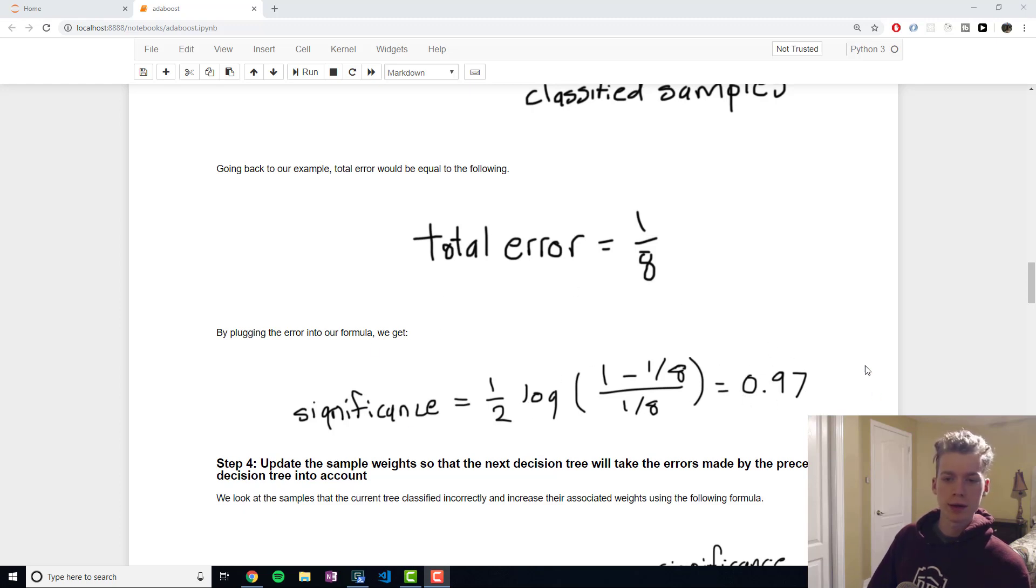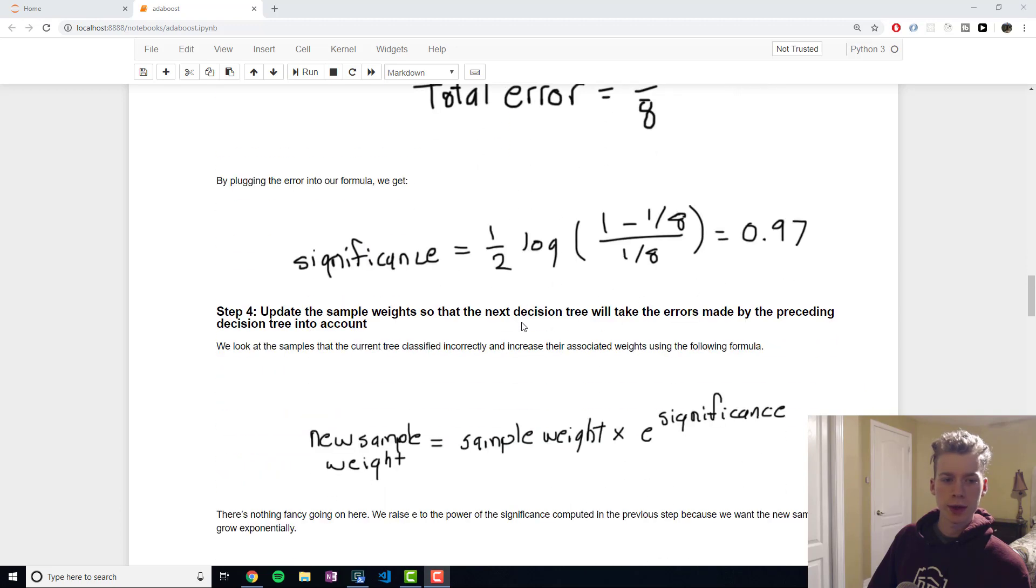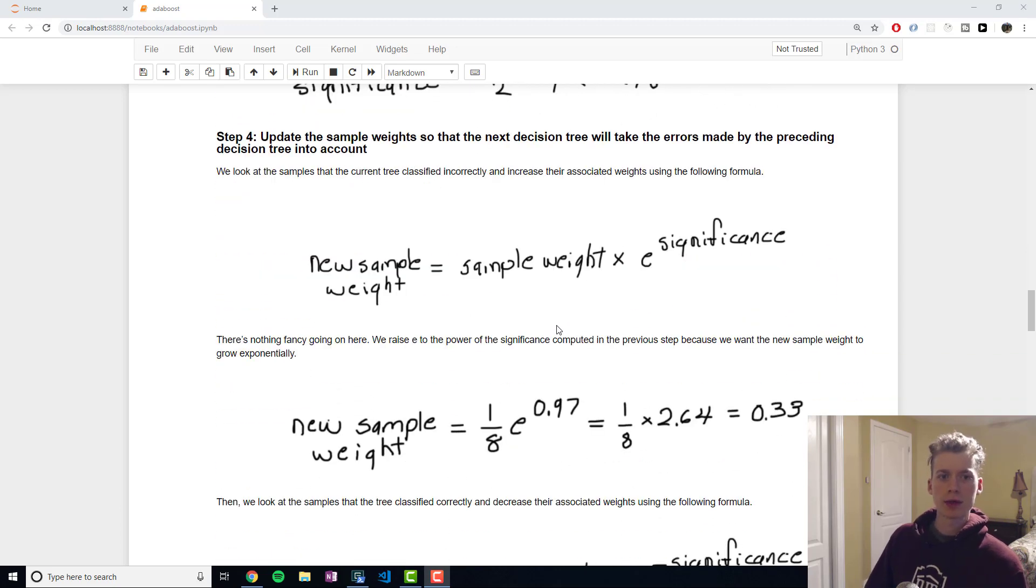Keep this number in mind because we're going to use it later. Step number four is to update the sample weights so that the decision tree will take errors made by the preceding tree into account. The way we do that is we calculate a new set of sample weights. The sample weight associated with the sample that the previous tree classified incorrectly is going to end up being higher.